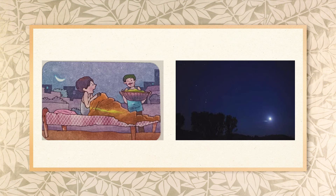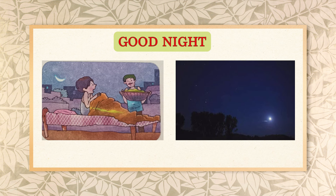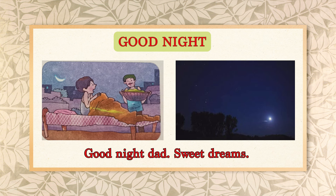Let's see the next picture — a child is about to sleep. The sky is full of stars and you can see the moon in the sky. When we go to bed, at that time we say good night. For example: good night dear, sweet dreams. Good night dear, sleep well.